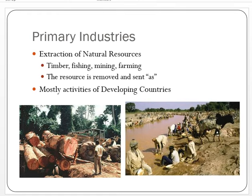Primary industries are those involving the extraction of natural resources — fishing, farming, timber, mining, and oil extraction. These are industries where materials are taken from the earth, gathered, and sent somewhere as-is. Most of these activities today are happening in countries we would consider developing countries, and there is a very distinct landscape associated with primary industries.